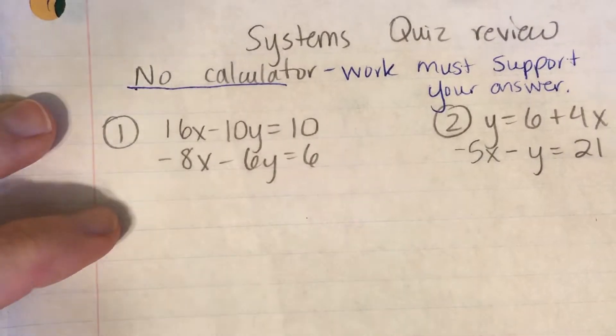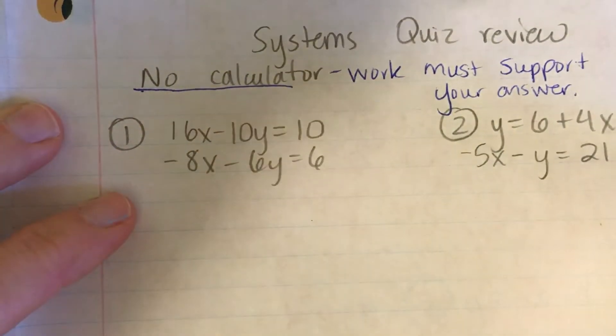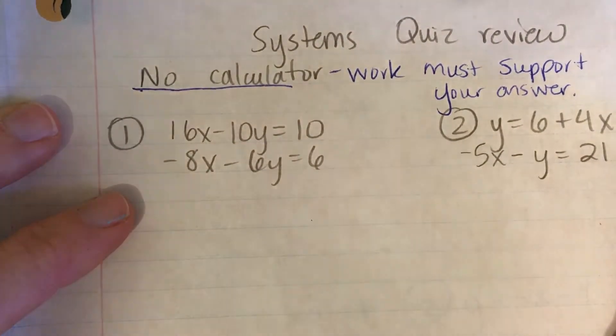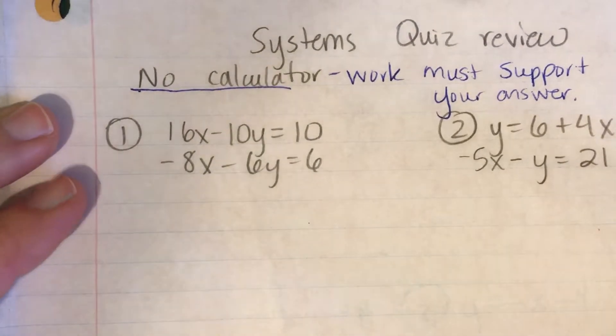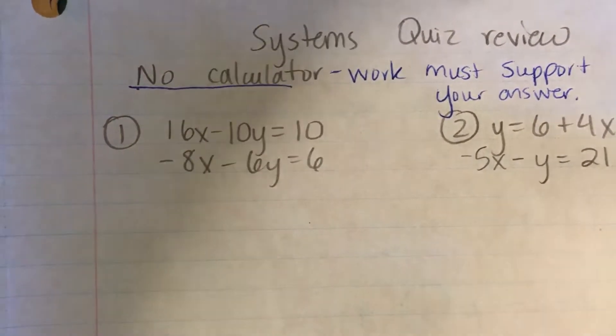Okay, so number one, when I look at this, this is a multiply multiply cancel cancel problem. So I've got to get something to cancel out here.